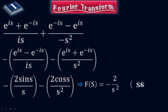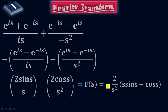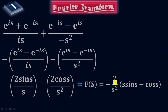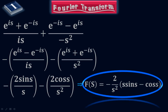After further simplification, taking negative 2/s² common, the final result is f̂(s) = −(2/s²)·(s·sin(s) − cos(s)). The power of s is 1 in the sin term, so cancelling one s from s² leaves s in the denominator after factoring. This is the Fourier Transform of the given piecewise function.